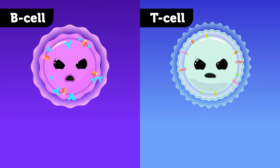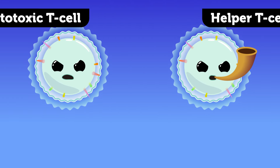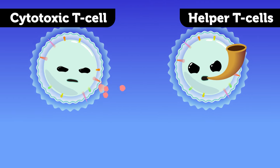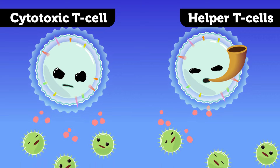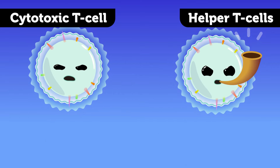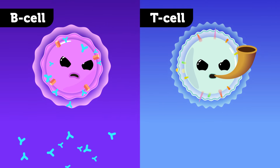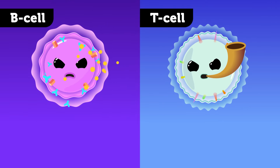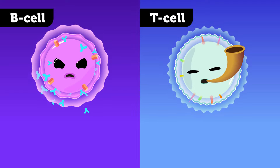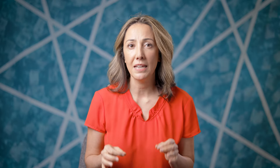T cells also look for specific pathogens, but they do it a little differently. While B cells and their antibodies seek out pathogens directly, T cells recognize our own infected cells. When they find one, they call in reinforcements: cytotoxic T cells and helper T cells. Cytotoxic T cells are in charge of destroying the infected cells, while helper T cells coordinate the rest of the response. They help B cells produce antibodies by nudging them into action, or releasing cytokines — the protein distress signals we talked about earlier.